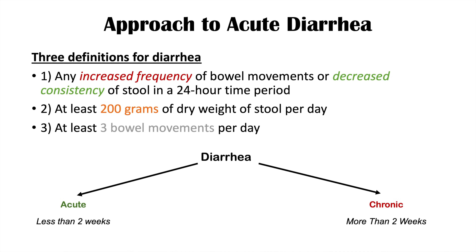There are some definitions like subacute diarrhea, and sometimes you might see that term used for diarrhea between two to four weeks, with chronic diarrhea defined as more than four weeks. But most of the time you're going to see: acute diarrhea less than two weeks, and chronic diarrhea more than two weeks.